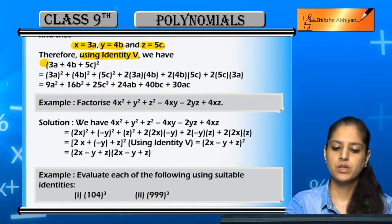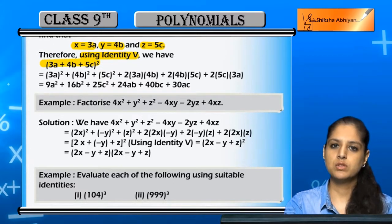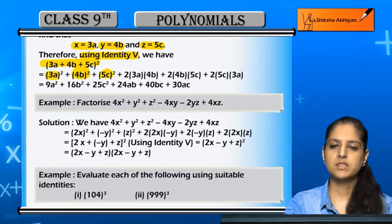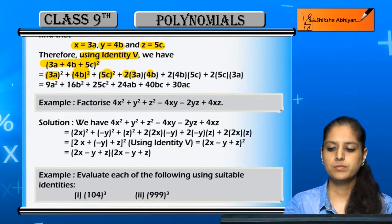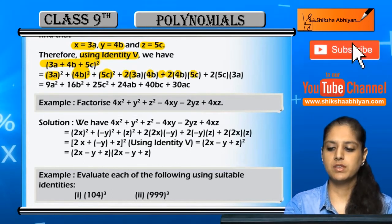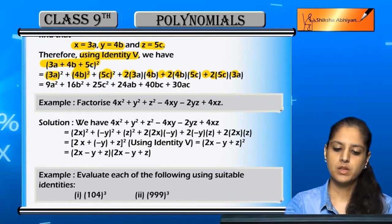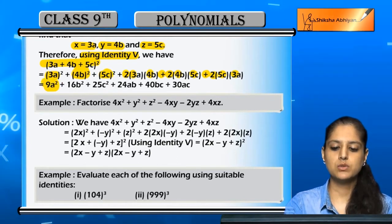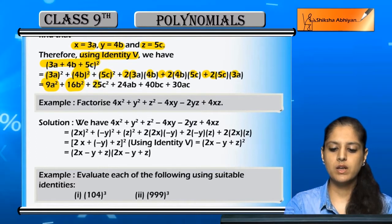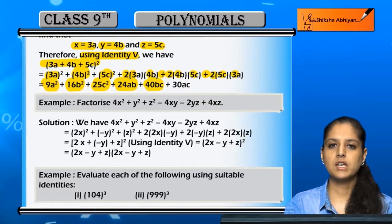Using the identity, 3a plus 4b plus 5c whole square equals 3a whole square plus 4b whole square plus 5c whole square plus 2 times 3a times 4b plus 2 times 4b times 5c plus 2 times 5c times 3a. This is the first term times second term, second term times third term, and third term times first term. Solving further, we get 9a² + 16b² + 25c² + 24ab + 40bc + 30ac. This is the expanded form.